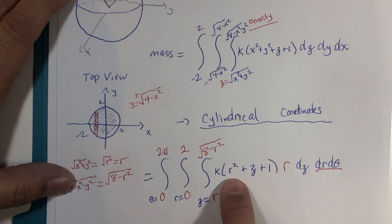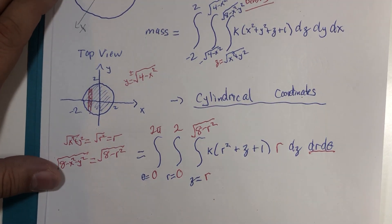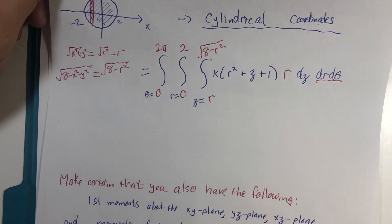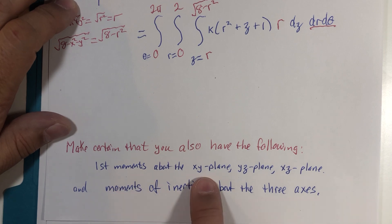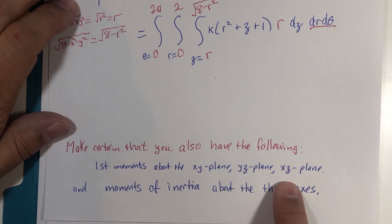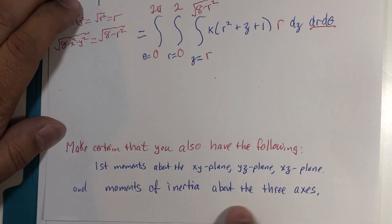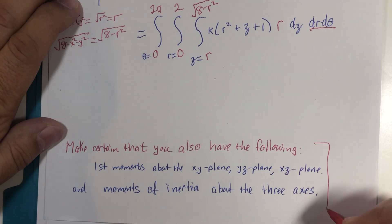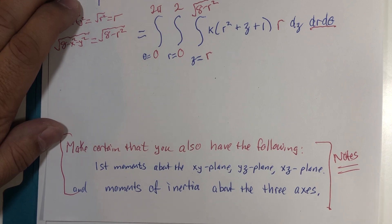So there you have it — rectangular and cylindrical form for the mass of that region with the given density function. To my own students: make certain you have listed from our textbook the first moments about the xy, yz, and xz planes, which relate to finding the center of mass. Also write down the moments of inertia about the x, y, and z axes. Keep things organized — hit the pause button, write it down, rewrite it if it's messy. Till next time.